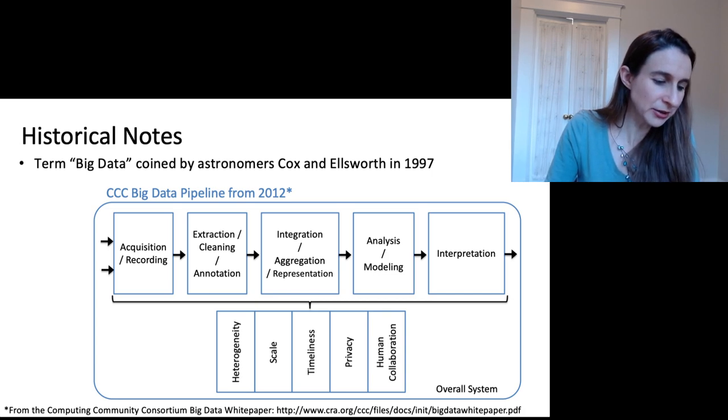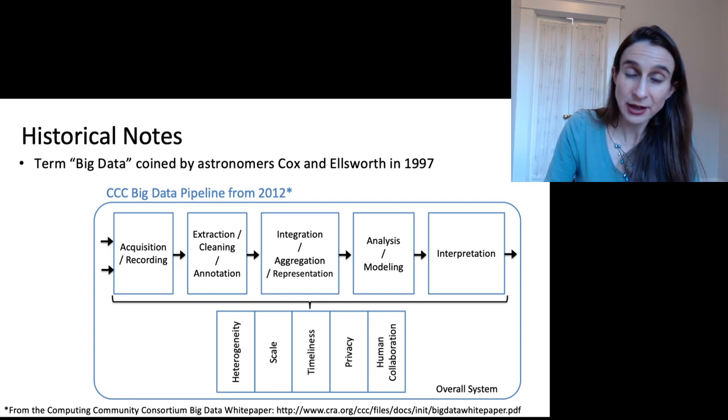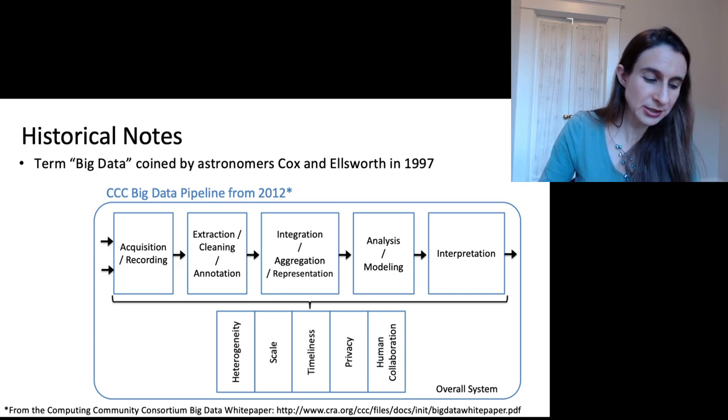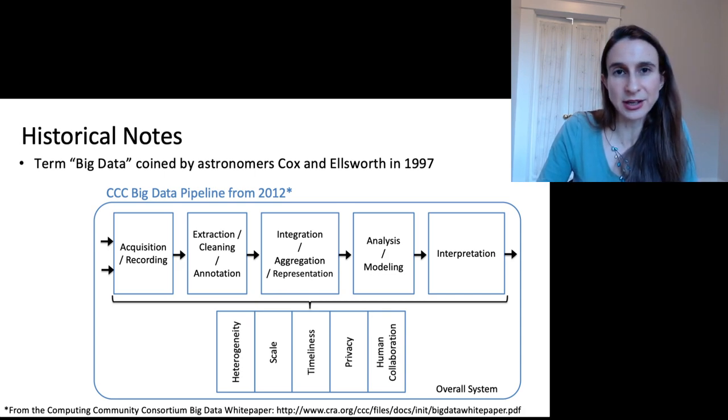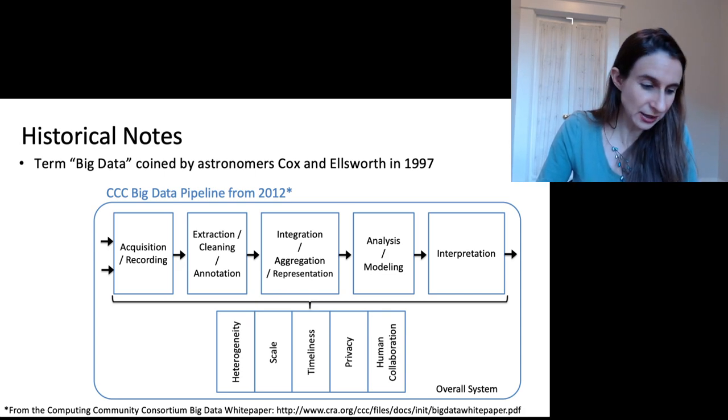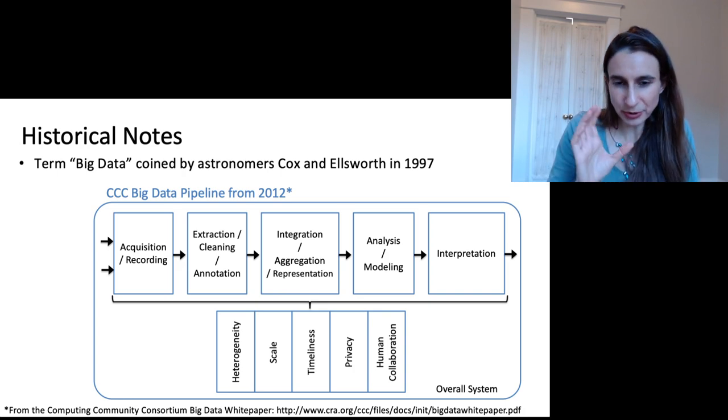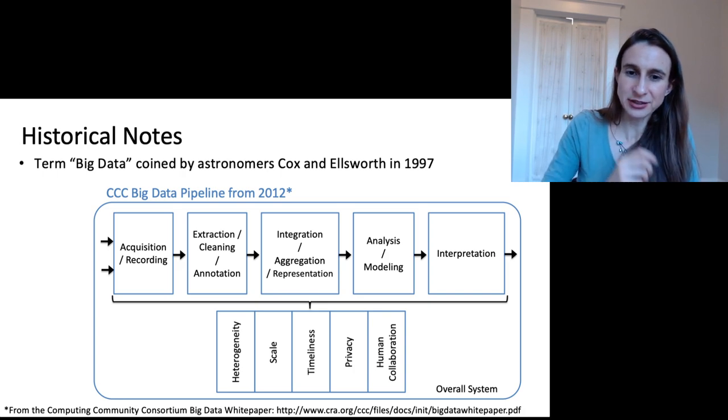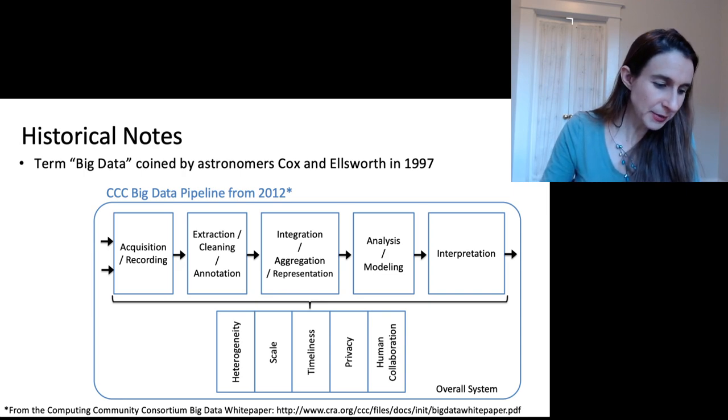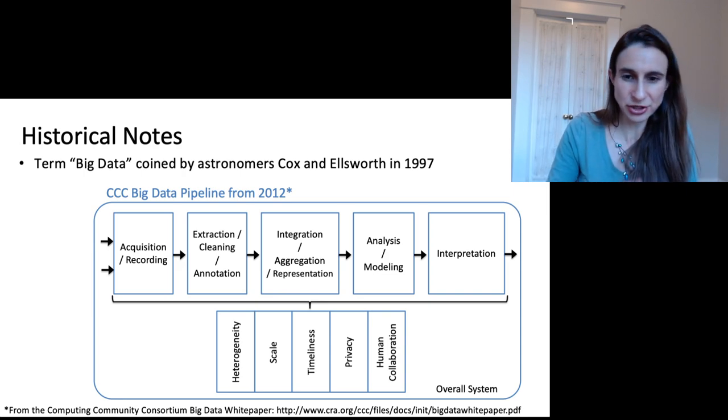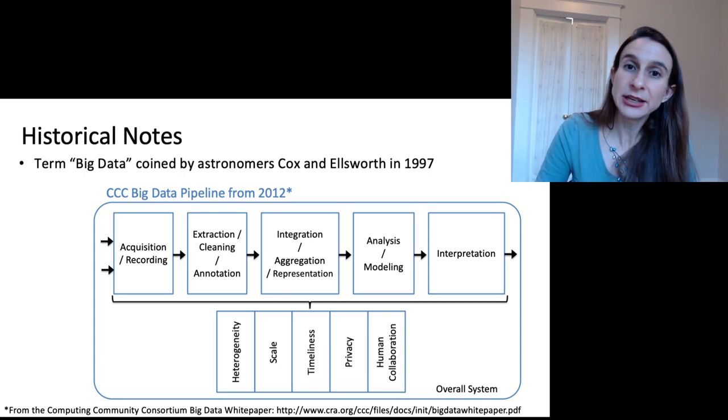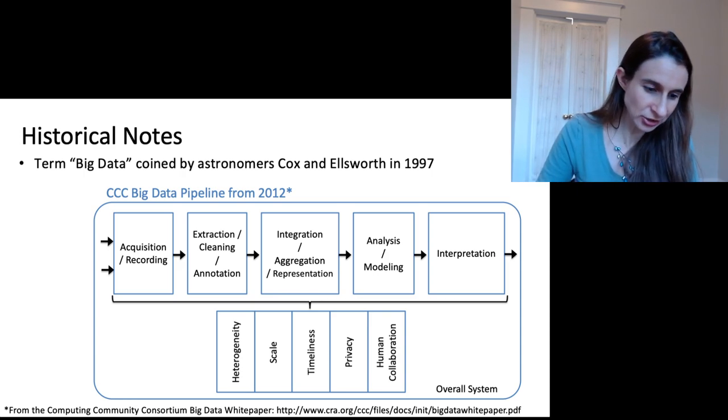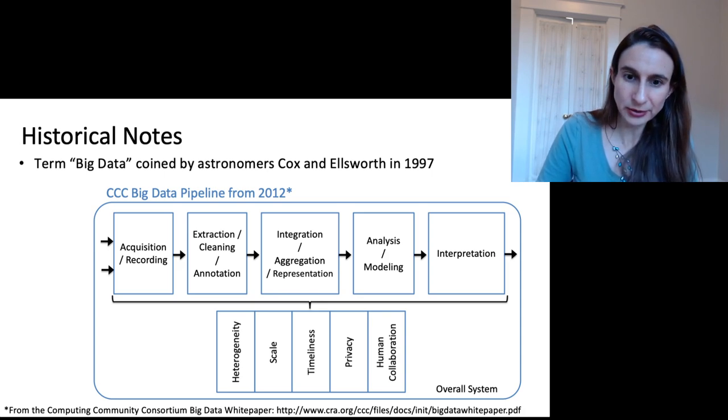I'm showing you here the CCC big data pipeline from the white paper in 2012. It's an effort to formalize the scientific process that goes into discovering knowledge from data. The process is not just data mining - that's actually the fourth step out of five. The major steps in the analysis of big data are shown in that flow chart at the top, and beneath it are big data needs that make the tasks challenging.